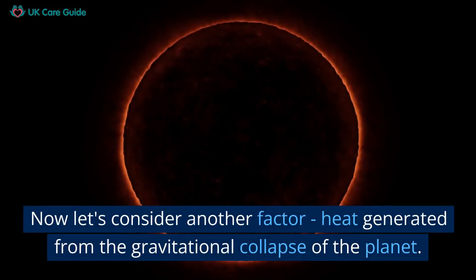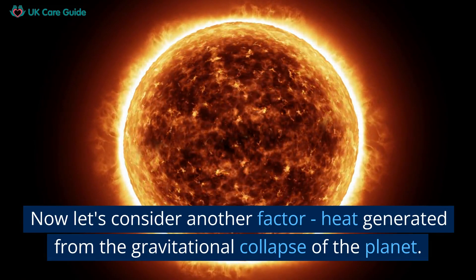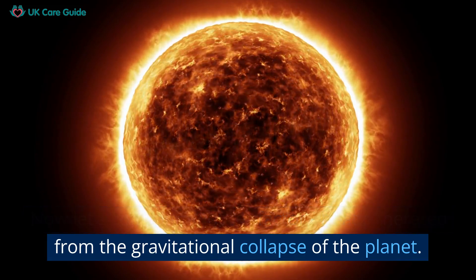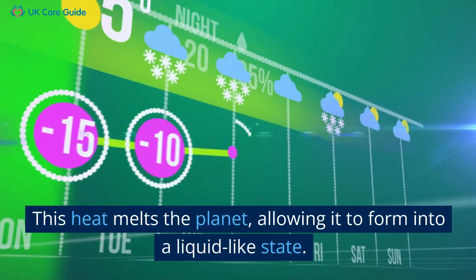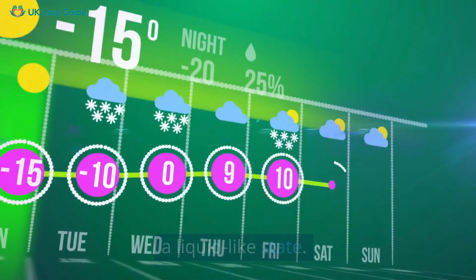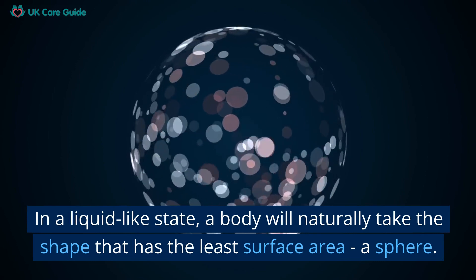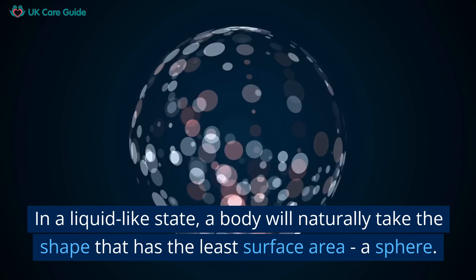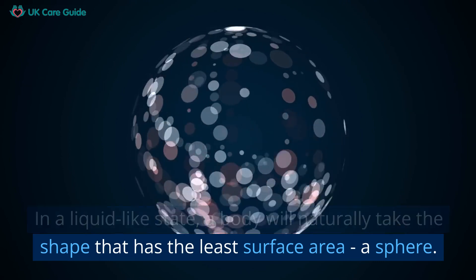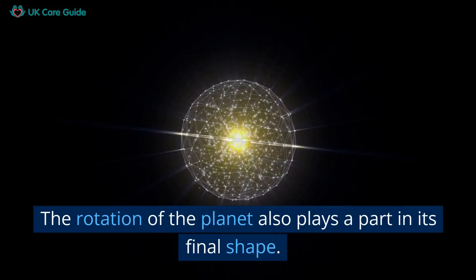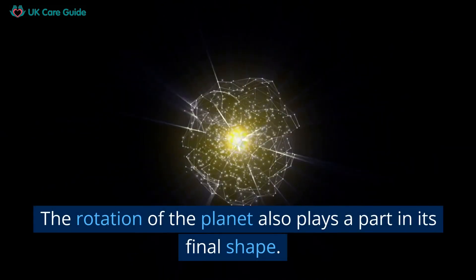Now let's consider another factor: heat generated from the gravitational collapse of the planet. This heat melts the planet, allowing it to form into a liquid-like state. In a liquid-like state, a body will naturally take the shape that has the least surface area — a sphere.